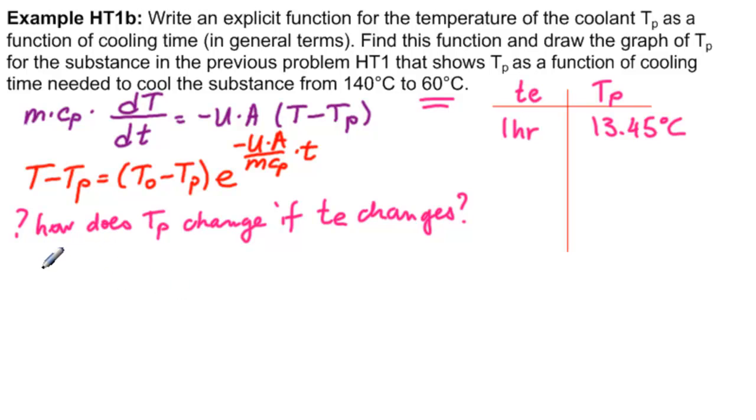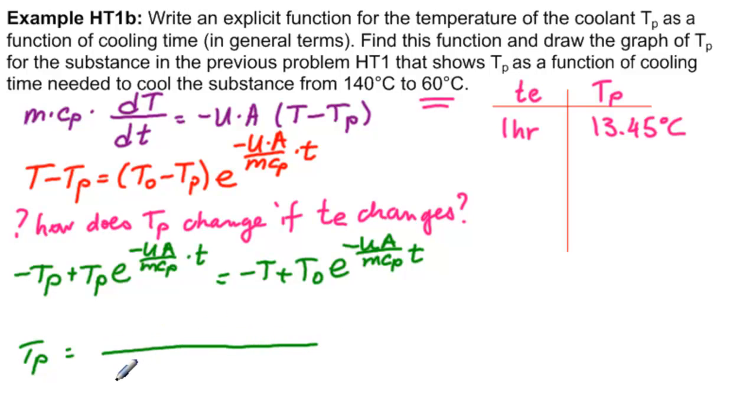So we have on this side minus TP. And then when we put that on that side, it'll be plus TP times E to the minus UA over MCP times T. And then this goes on that side, so it's minus T plus T0 times E to the minus UA MCP T. So we'll divide out TP. And on the bottom, what do we get here? Let's reverse the signs so that they're positive, so this part comes first.